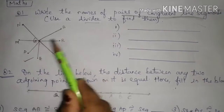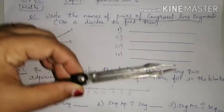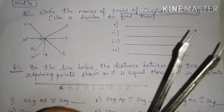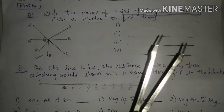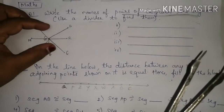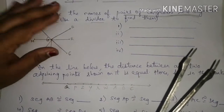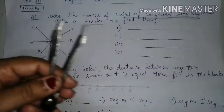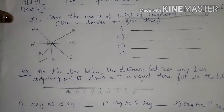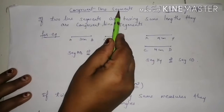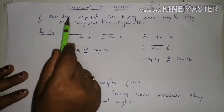You have to use a divider to find them — this tool in your compass is called a divider. We have to make use of this divider on the given figure and write the congruent line segments. Now, what are congruent line segments? If two line segments have the same length, they are congruent line segments.